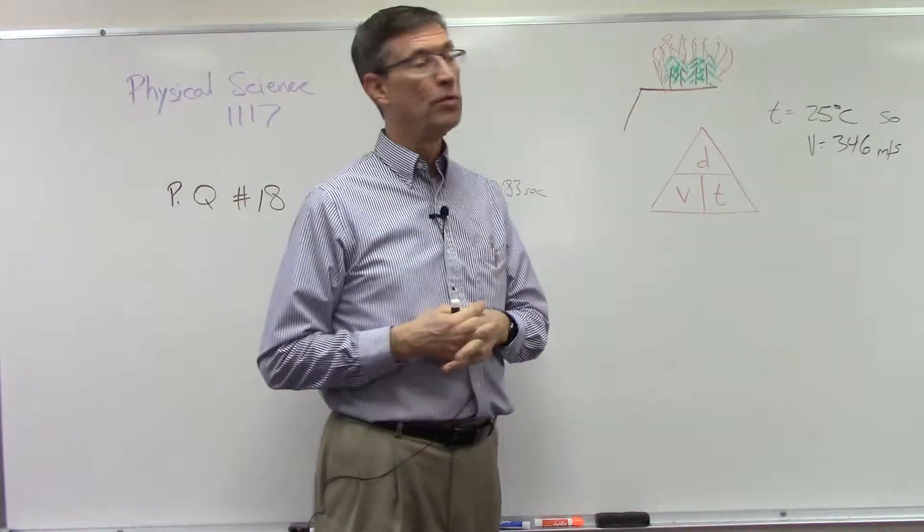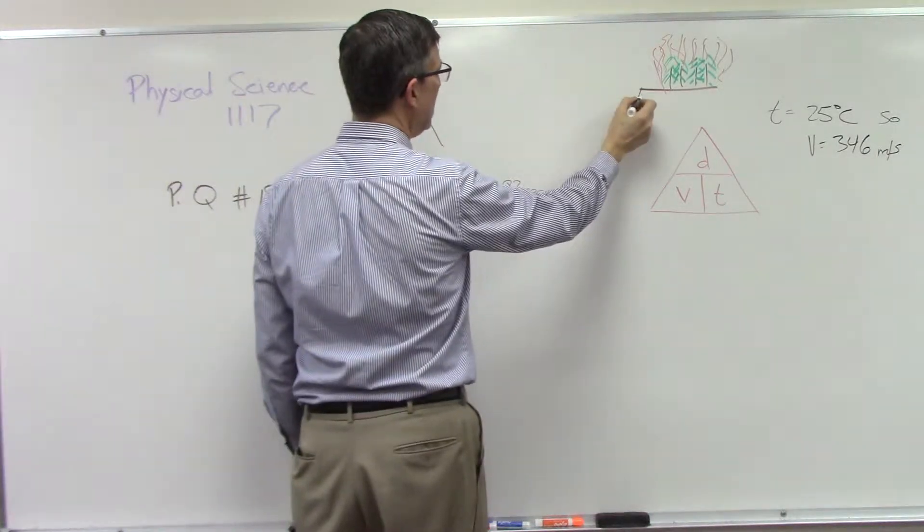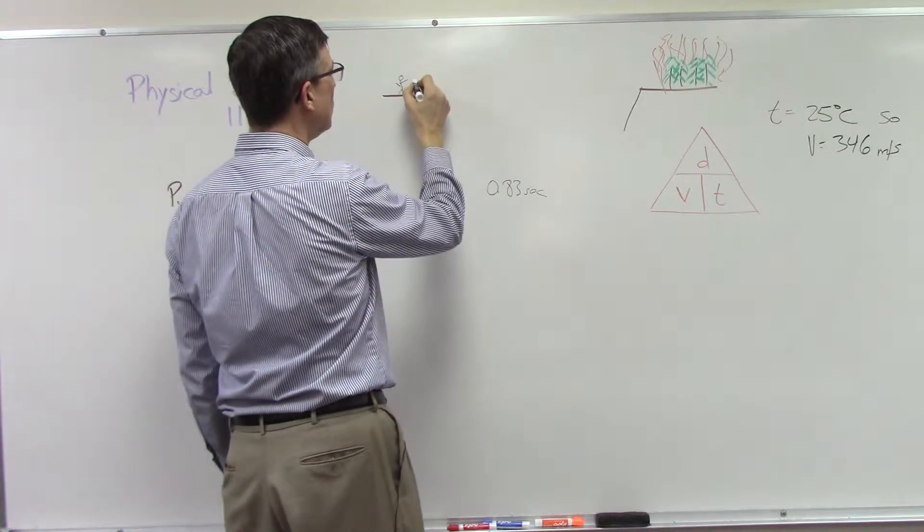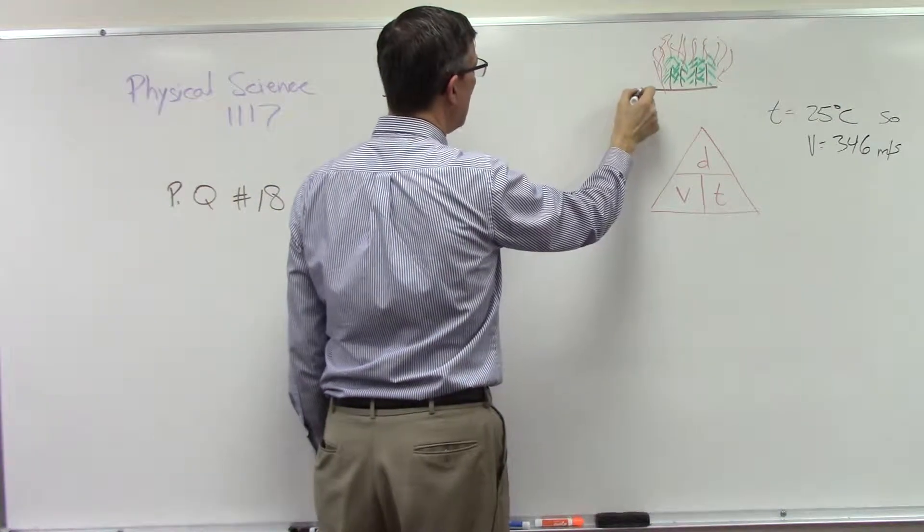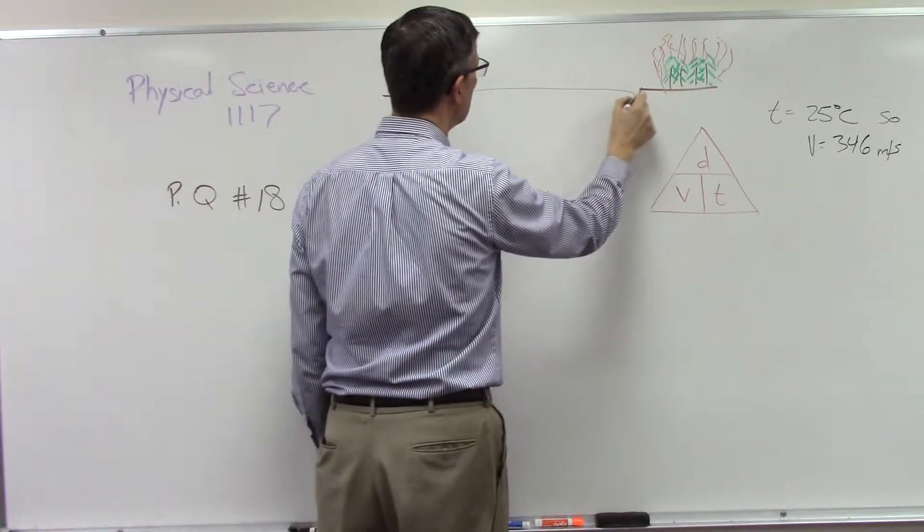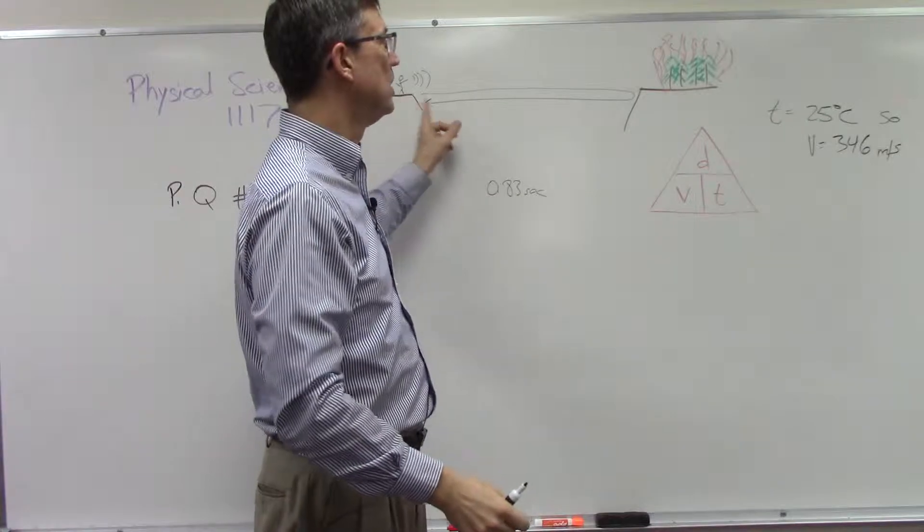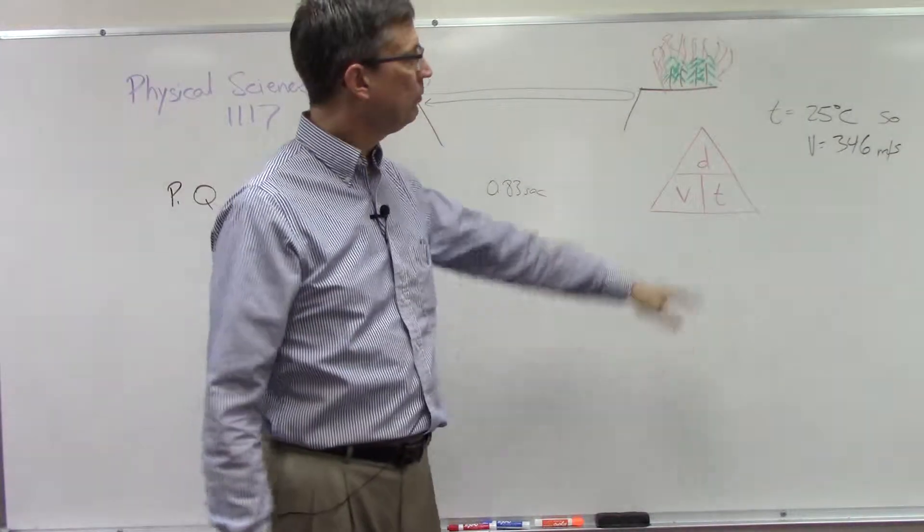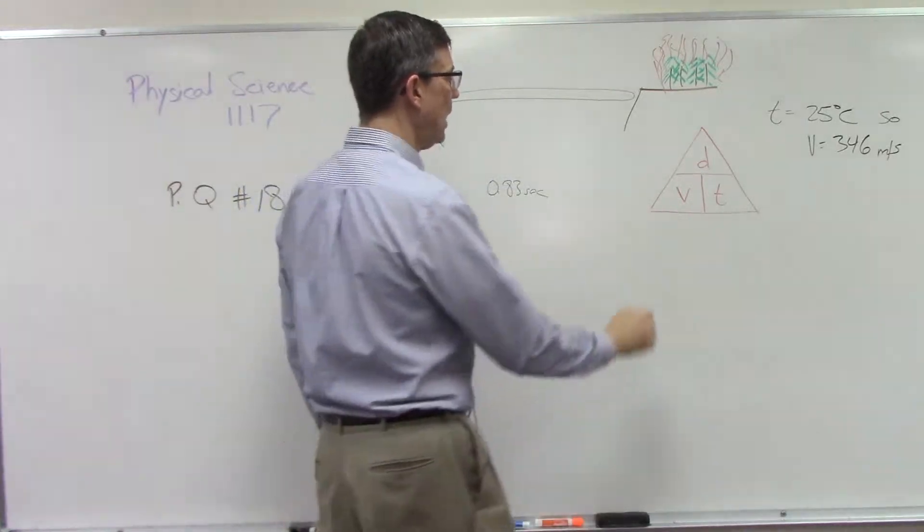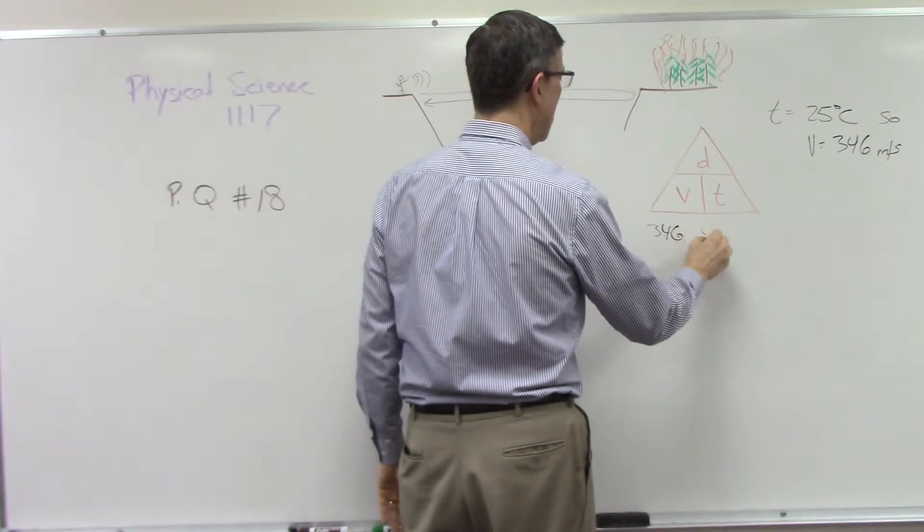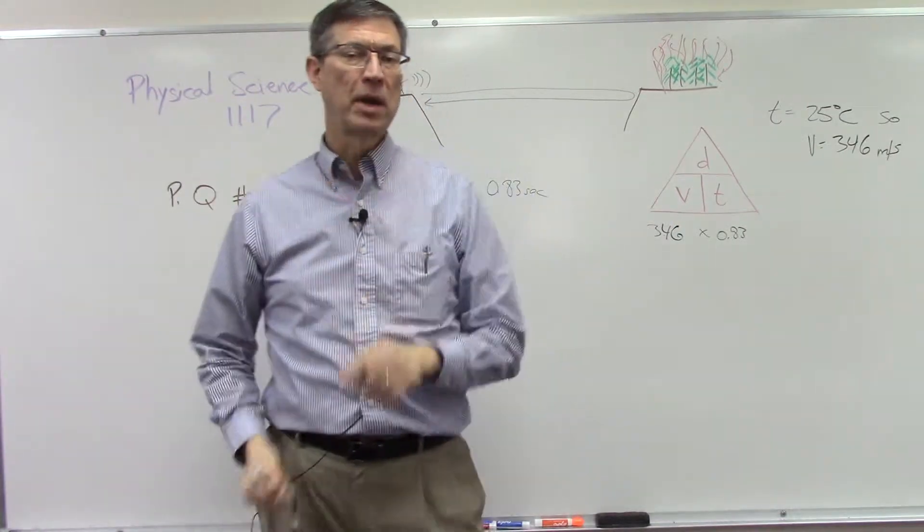So what are we asked to find here? We are asked to find the distance. The echo, it says, travels. So he's yelling and it goes all the way across, hits the other wall, and then it turns around and comes back. Hits the wall, turns around, echoes back, and then he hears it. It takes 0.83 seconds for his echo to return to him. So what we're going to do is take the 346, which is the velocity, times the 0.83.